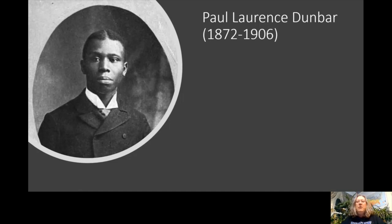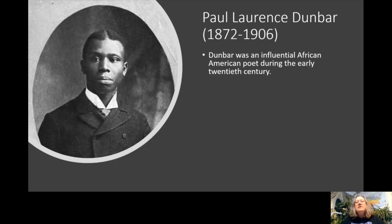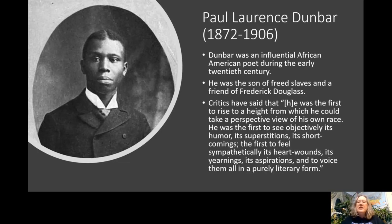Before we read the poem, it's important to know a little about Paul Lawrence Dunbar, who was born in 1872 and died in 1906. Dunbar was an influential African-American poet during the early 20th century. He was the son of freed slaves and a friend of Frederick Douglass. Critics have said he was the first to rise to a height from which he could take a perspective view of his own race — the first to see objectively its humor, superstitions, shortcomings, and to voice its heart wounds, yearnings, and aspirations in a purely literary form.